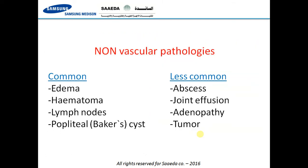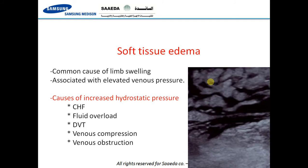The non-vascular pathologies can be divided into common and less common. Common pathologies include edema, hematoma, lymph nodes, and popliteal (Baker's) cysts. Less common include abscesses, joint effusion, adenopathy, and tumors. Soft tissue edema is a common cause of limb swelling and pain, usually due to elevated venous or hydrostatic pressure. Common causes include congestive heart failure, fluid overload, deep venous thrombosis, venous compression, and venous obstruction. Fluid collects between the subcutaneous soft tissues, giving a reticulated, marbled, or cobblestone appearance.